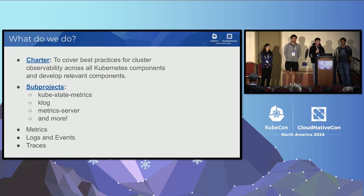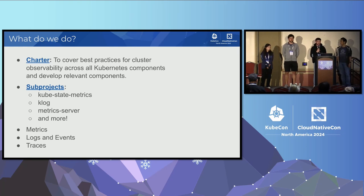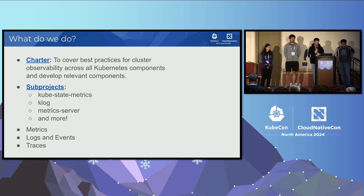Our charter — what we stand by as a group — is to cover the best practices for cluster observability across all the Kubernetes components and develop any component that would be relevant to solve that problem. To do that, we have sub-projects. There are a few named on the slide: kube-state-metrics, klog, metrics-server. Those are the most famous and most used ones.